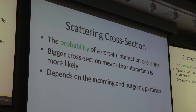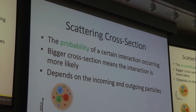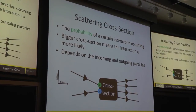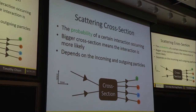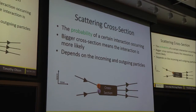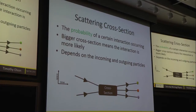The scattering cross-section essentially tells us the probability of certain interactions occurring. A bigger cross-section means the interaction is more likely — there's a very large cross-section for making a mess when you collide Legos. The cross-section also depends on which type of particles are involved: quarks versus gluons, or blue versus yellow Legos. If two quarks from two incoming protons collide, the cross-section is a black box telling you there's a certain probability of measuring quarks and maybe electrons and positrons coming out. As an experimentalist, you do this millions and millions of times and build up a picture of what might be inside that box.